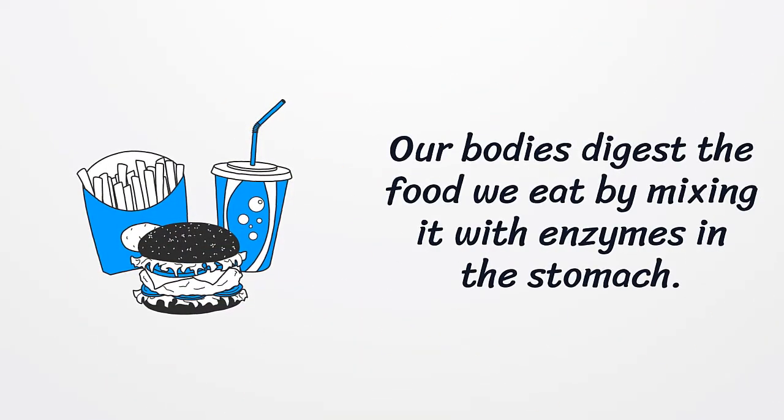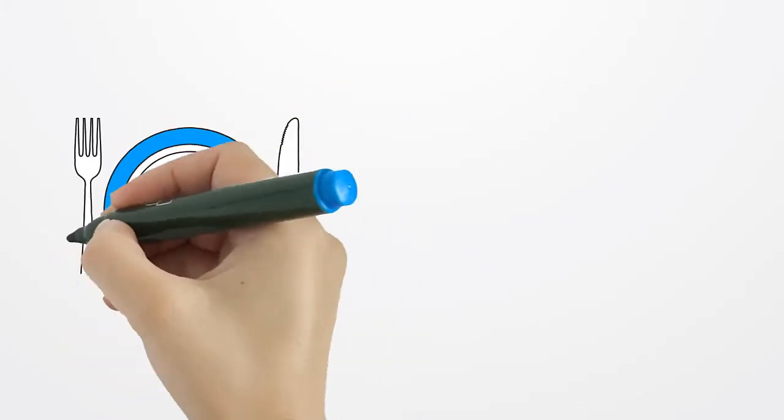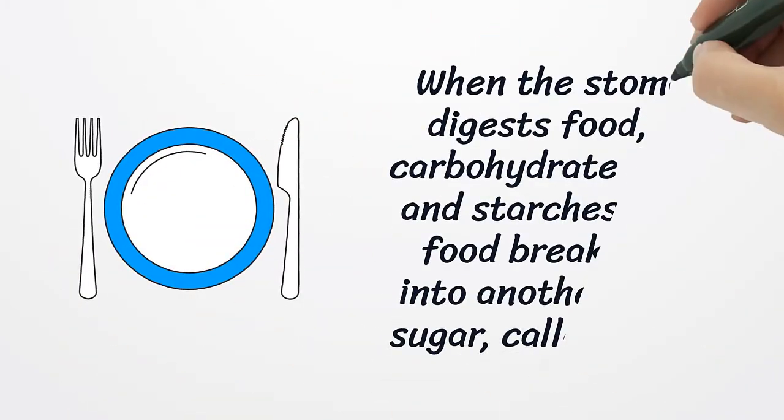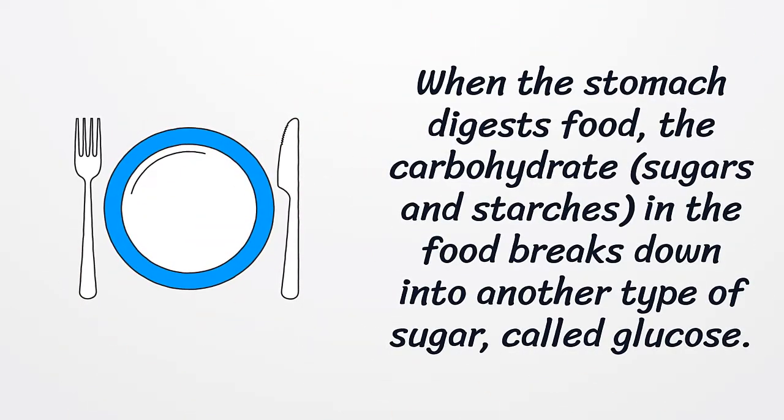Our bodies digest the food we eat by mixing it with enzymes in the stomach. When the stomach digests food, the carbohydrates in the food break down into another type of sugar called glucose.